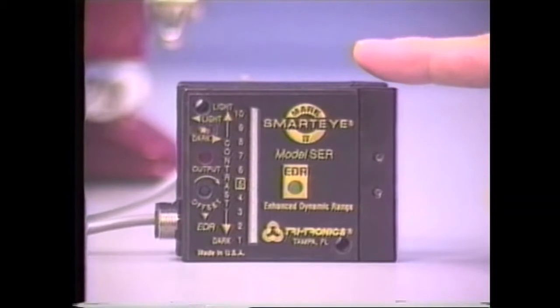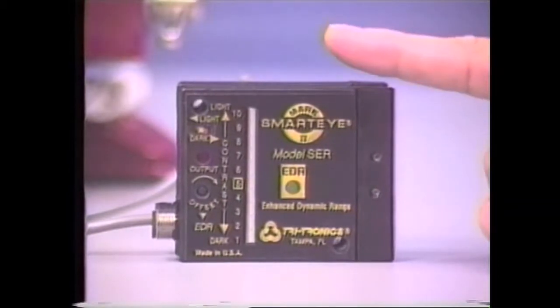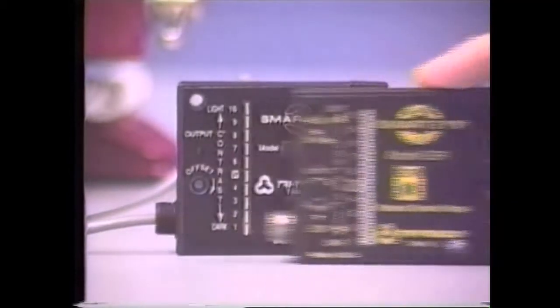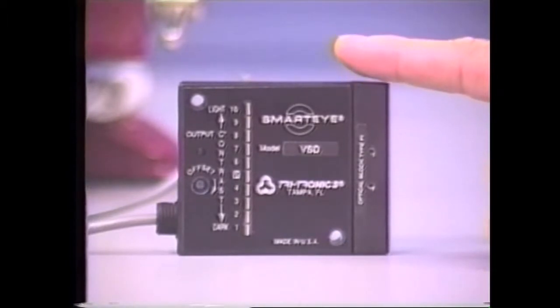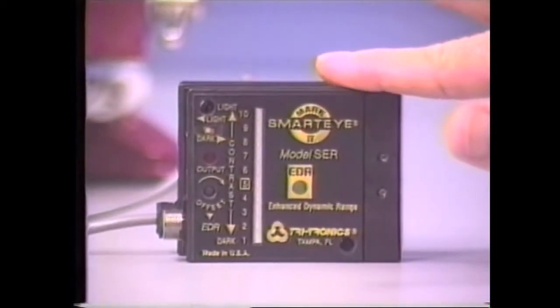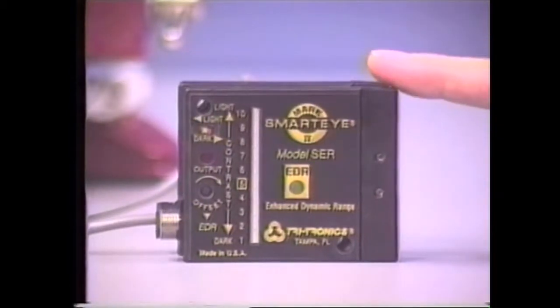Let's briefly review the speed of response capability of the new Mark II Smart Eye sensor—it's been improved. But before we do, let's briefly review the speed of response capabilities of the original Smart Eye. This is the model VSD Smart Eye—it could respond to input events under ideal conditions lasting as little as 100 microseconds. The new Mark II, however, can now respond to input events lasting as short as 50 microseconds—quite an improvement. Let's take a look at the new Mark II Smart Eye in a typical relatively high-speed sensing test. Here we go.